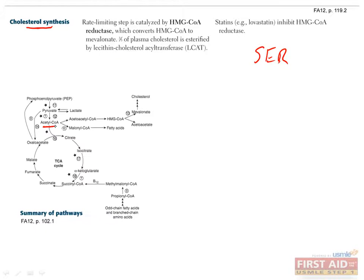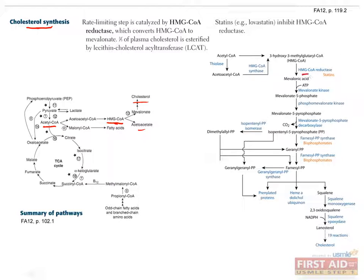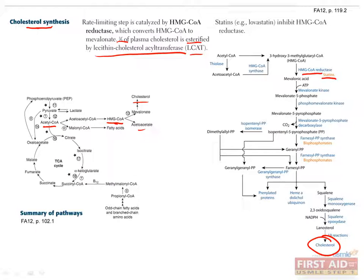Acetyl coenzyme A is used to make HMG coenzyme A, which can then be used to synthesize either ketone bodies or cholesterol. HMG coenzyme A reductase is the rate-limiting step in cholesterol synthesis, and therefore this is the enzyme targeted by the statin drug class, which inhibits cholesterol synthesis. Once cholesterol has been synthesized, about two-thirds of it is esterified by the enzyme lecithin-cholesterol acyltransferase, or LCAT. Esterification of cholesterol allows it to be stored inside vesicles rather than being embedded in the membrane, which is important so it can be transported through the blood to other parts of the body.